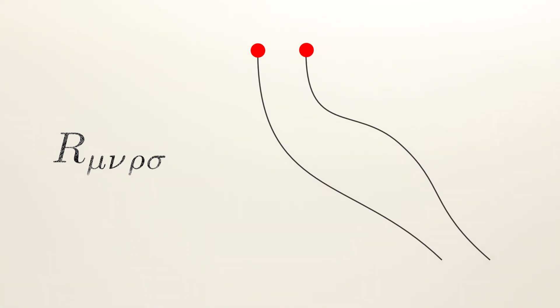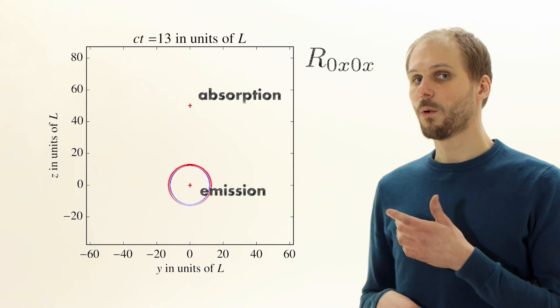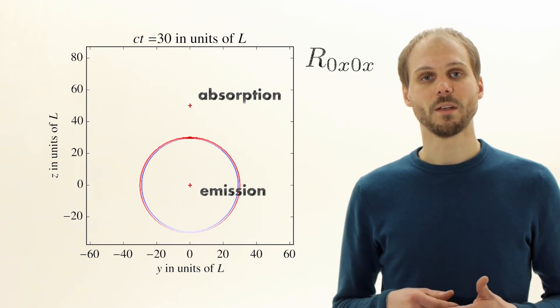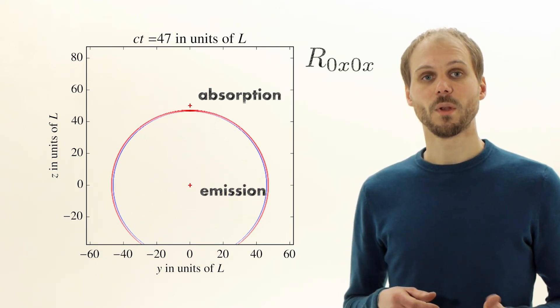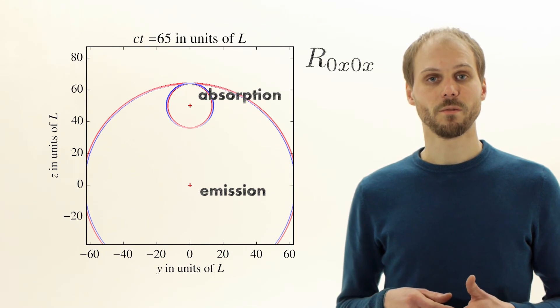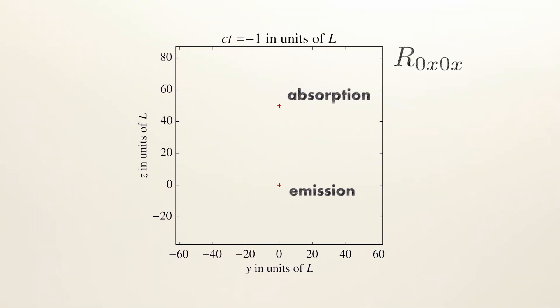The physical effect of the metric perturbation can be extracted from the Riemann curvature tensor R. The curvature tensor provides us with information about the spread and the contraction of neighboring trajectories of test particles. Here we see a particular component of the curvature tensor evolving in time. Red corresponds to negative values and blue to positive values.